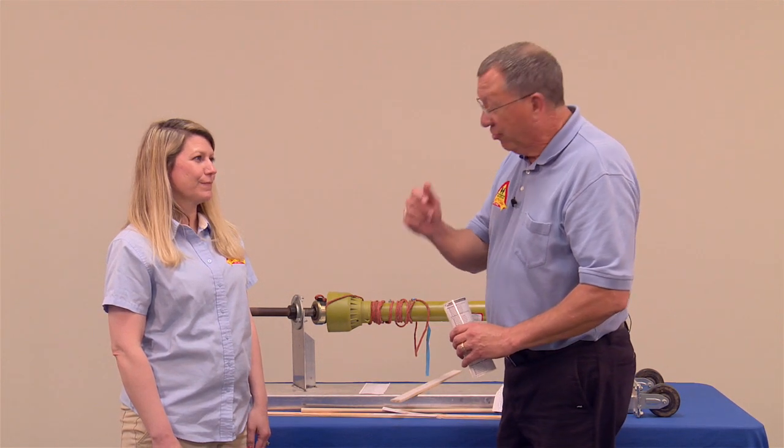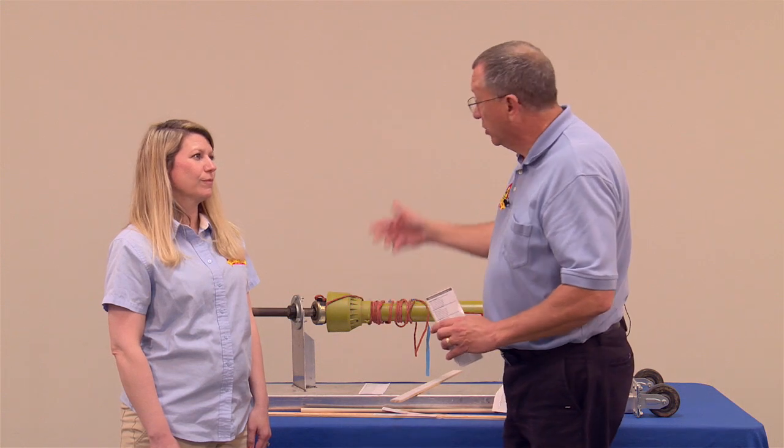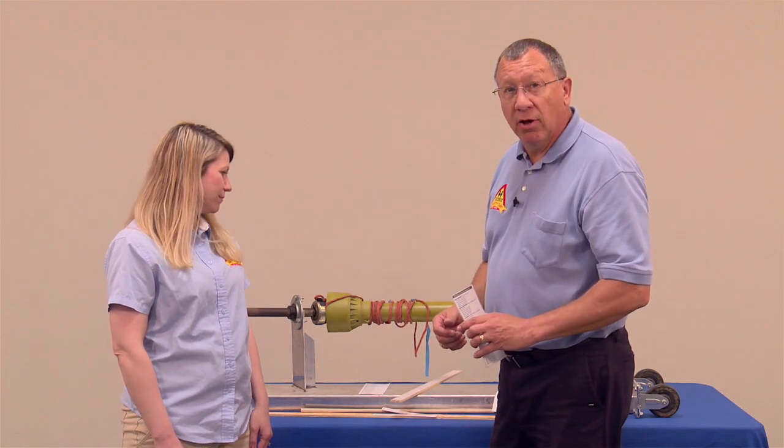Was Jana fast enough to get away? No, she wasn't. In 32 one hundredths of a second, nearly four feet of Jana was already wrapped around that power takeoff shaft.